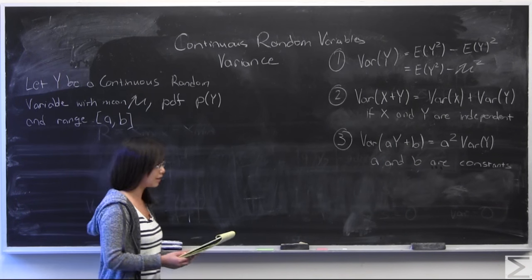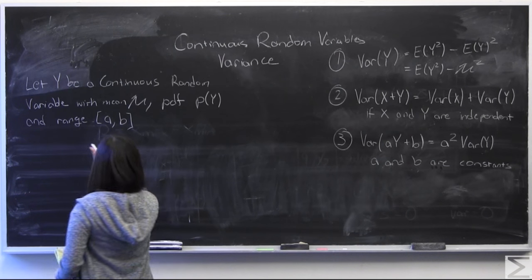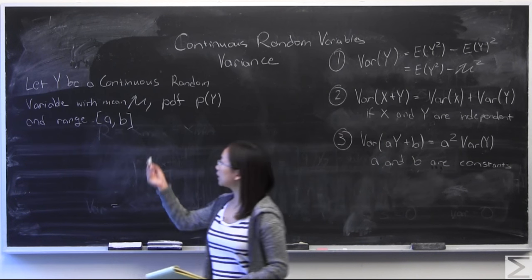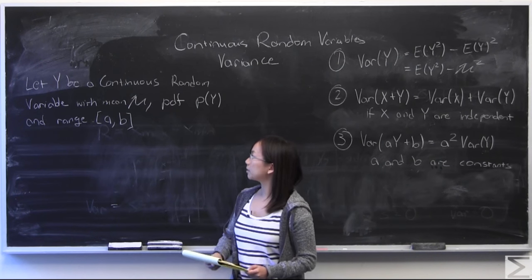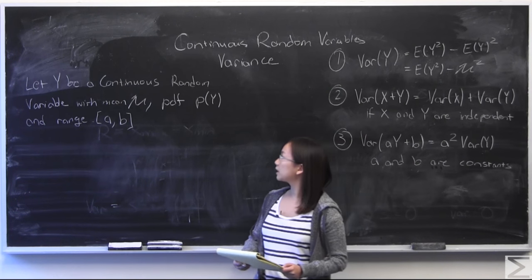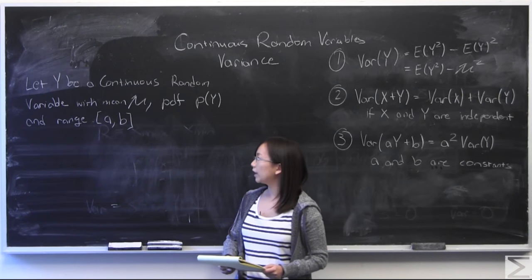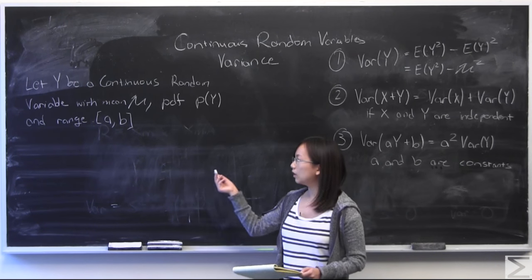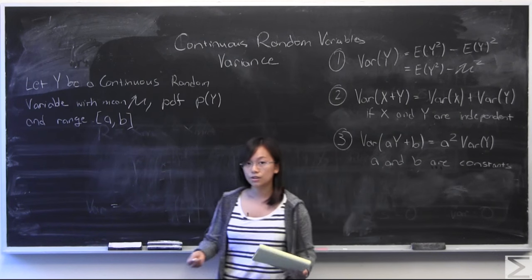I start by saying: let y be a continuous random variable with mean mu, probability density function p of y, and a range on a to b.